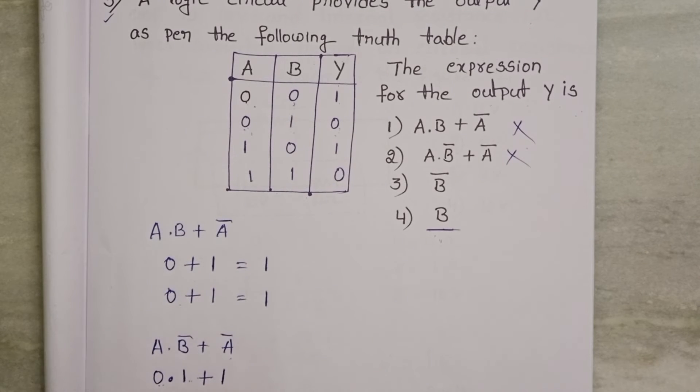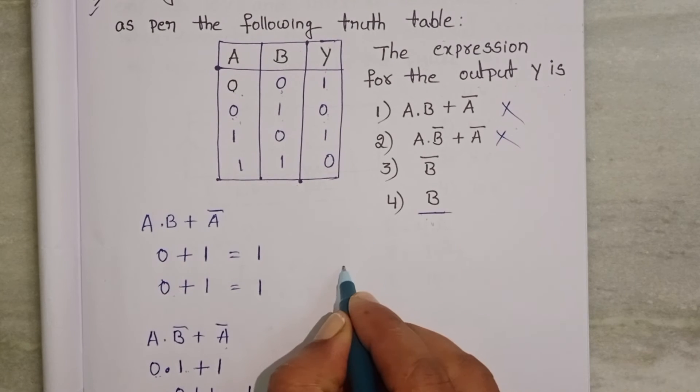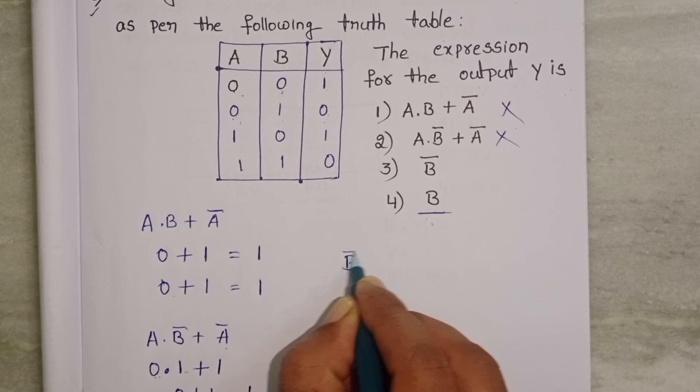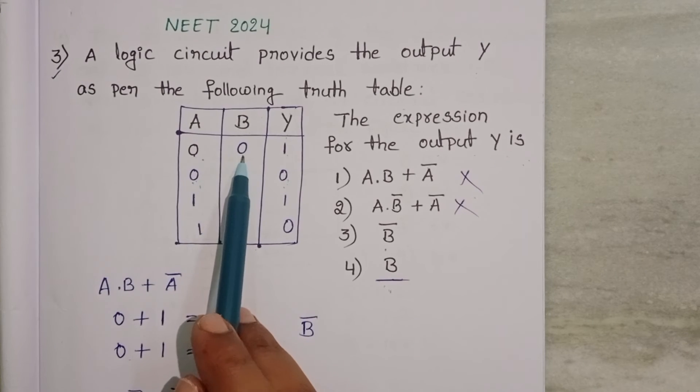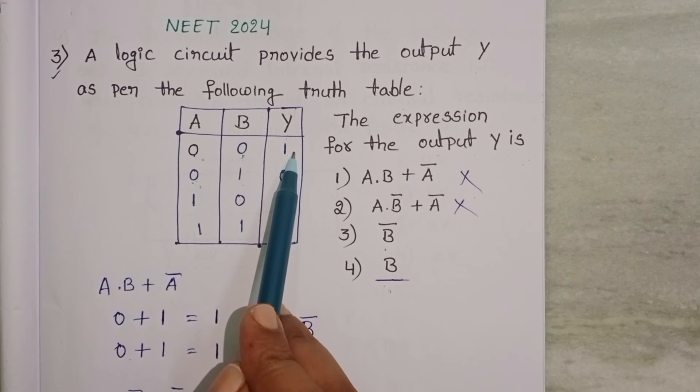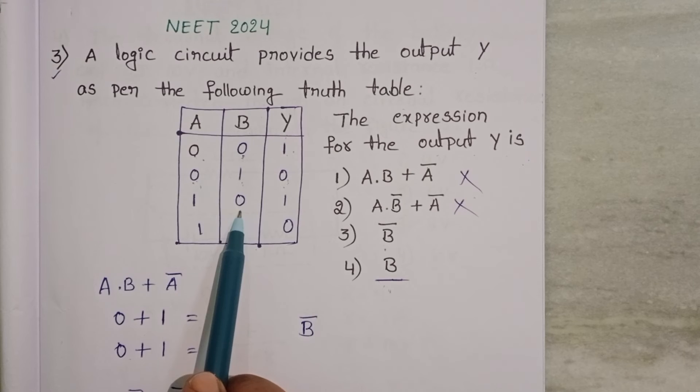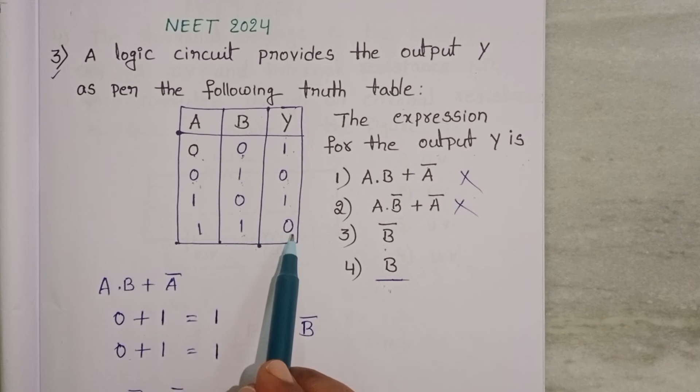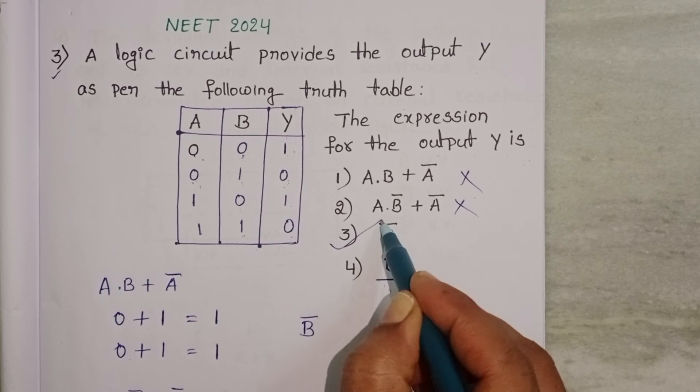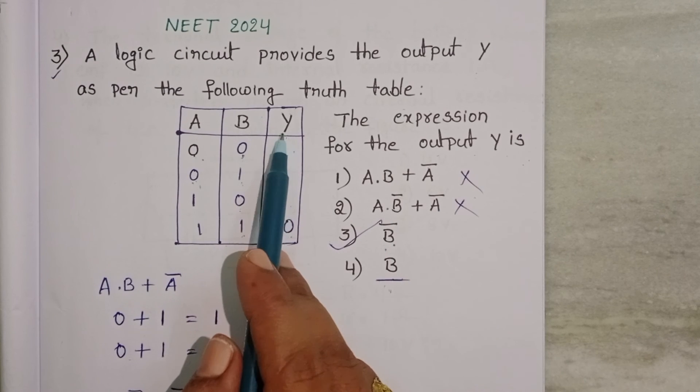So this expression is also not correct. Now take b naught. Only the expression is b naught. First input is 0 then b naught is 1. Here input is 1 then b naught is 0. Input is 0 then b naught is 1. Input is 1 then b naught is 0. So third expression is correct for this output.